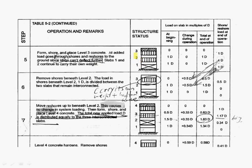Then we just snug the reshoring under the first slab and nothing will happen. Then we put on the third floor of fresh concrete slab. Because we have reshoring and shoring, none of them are allowed to deflect. So all the increased load is just transmitted through the shoring and reshoring to the ground.